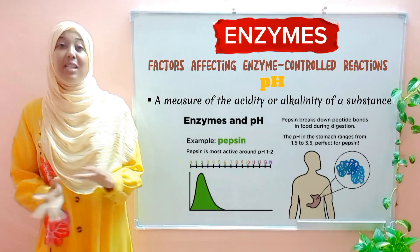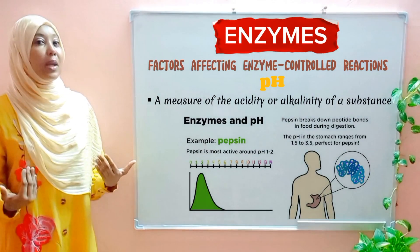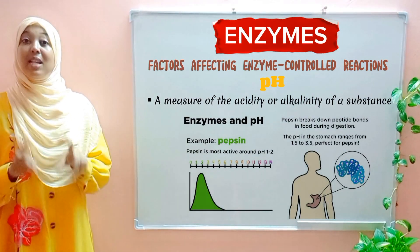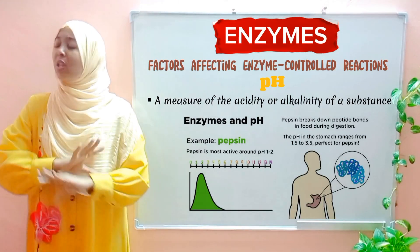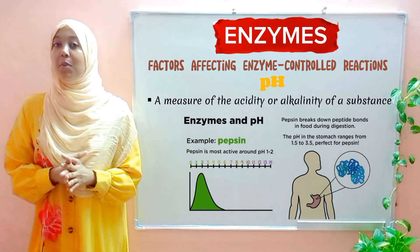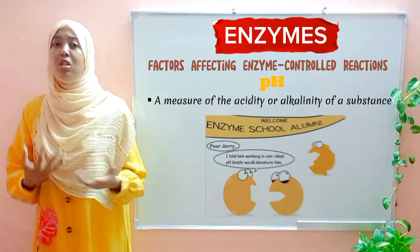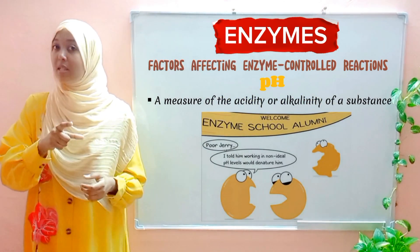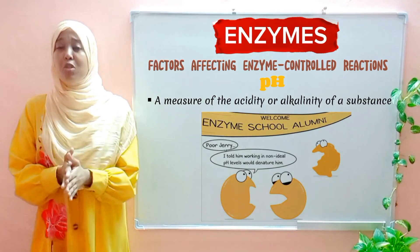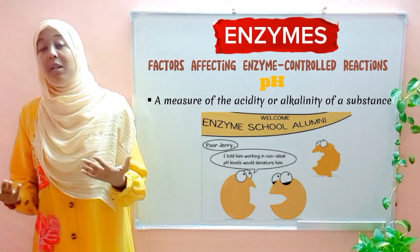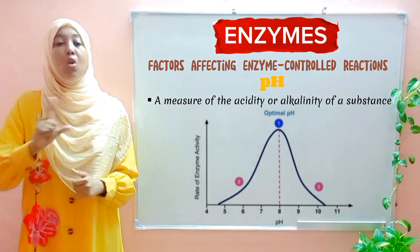In our stomach, hydrochloric acid is secreted, making the stomach pH acidic. Enzymes that function in the stomach, such as pepsin, usually prefer an acidic pH — their optimum pH is acidic. If you were to change this pH to a basic one, the enzyme would be denatured and destroyed, meaning it can no longer function and the rate of reaction will slow down and stop.